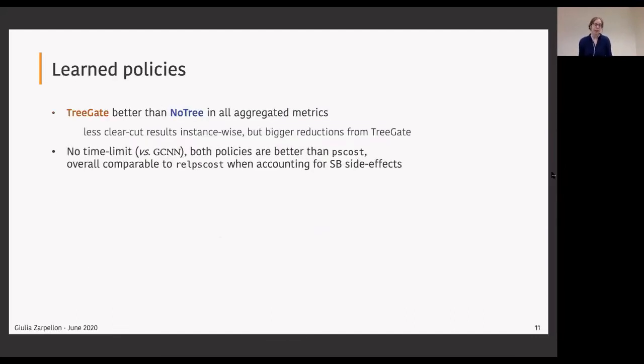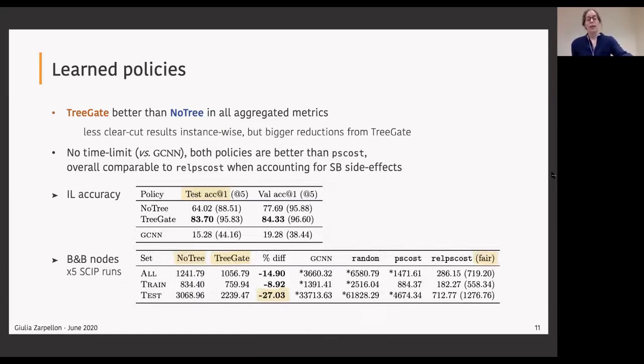The results are clearly showing that incorporating an explicit parameterization of the tree state helps the policies to generalize, both in terms of accuracy and in terms of reduced tree size. As we can see, the TreeGate architecture, the one which uses the tree explicitly, is better than the other one in all aggregated metrics. In the first table measuring test accuracy, the TreeGate policy has 19% better test accuracy than the NoTree. The GCNN method really struggles to fit this data that is coming from such heterogeneous instances. It reaches only an accuracy of 15%.